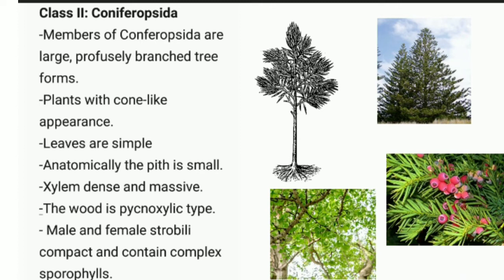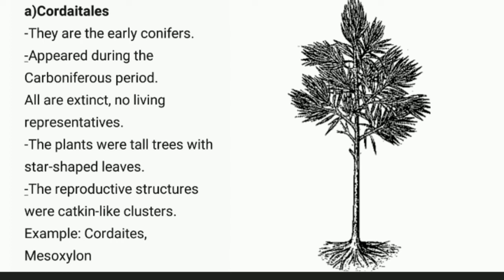On screen you can see images of Coniferopsida plants. The first order is Cordaitales — early conifers that appeared during the Carboniferous period. All are extinct with no living representatives. Plants were tall trees with star-shaped leaves, and reproductive structures were catkin-like clusters. Examples are Cordaites and Mesoxylon.